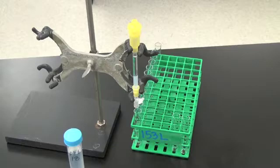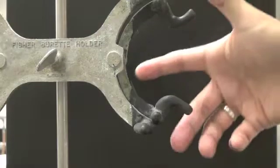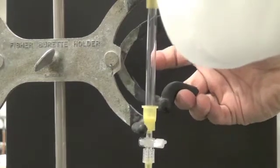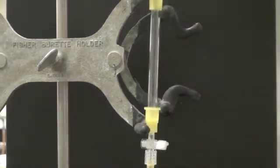First, open the butterfly clamp and insert the empty column. Make sure that the column is straight. Take a look at your agarose beads that you were provided, and note the volume.